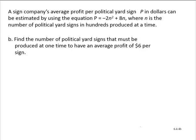Now we're asked to find the number of political yard signs that must be produced at one time to have an average profit of $6 per sign. So now we're told that we have the profit of $6 per sign, so we're going to let P equal 6. So substituting, we have 6 is equal to negative 2n squared plus 8n.